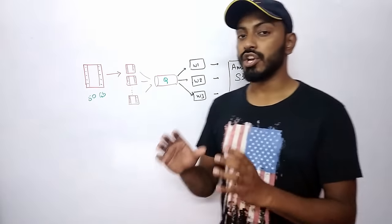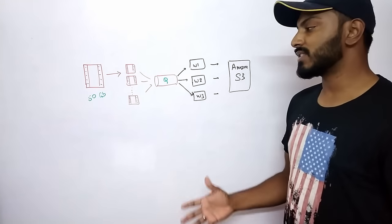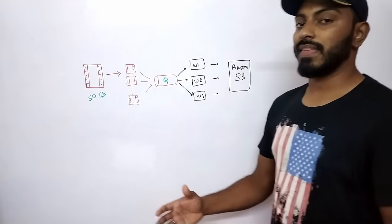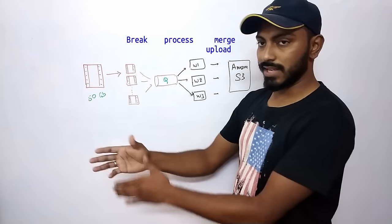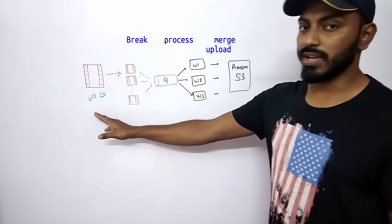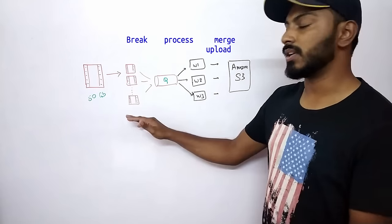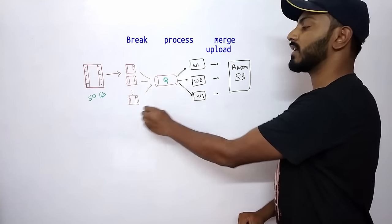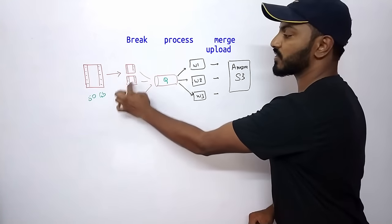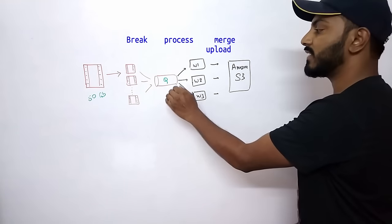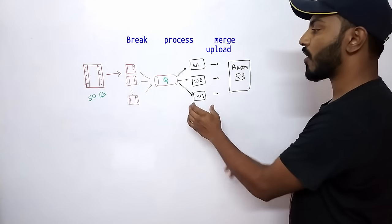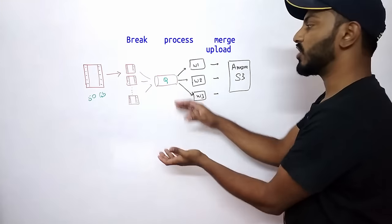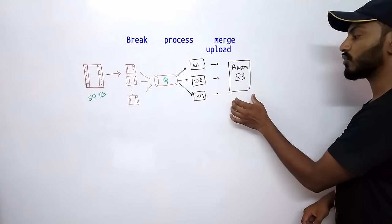That's a lot of files to be processed. Netflix uses many parallel workers to do this. When they onboard a particular movie, they get it as a single file of about 50 GB, break it into many different chunks, and put the processing tasks into a queue. These individual tasks are picked up by different workers that all process different chunks simultaneously. Once done, they merge and upload the clips to Amazon S3.